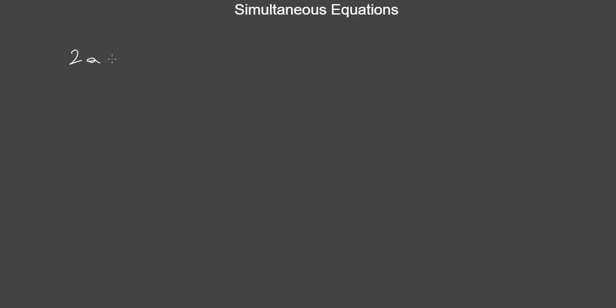Let's take a look at an example. Here we have 2a plus b equals 5, and we have a minus b equals 1. If you are presented with something like this and asked to find the value of a and b, you are essentially being told to solve simultaneous equations, because we have two equations and the goal is to solve both equations simultaneously, meaning at the same time.